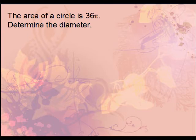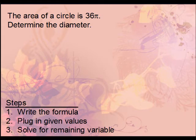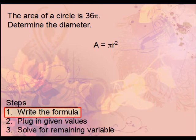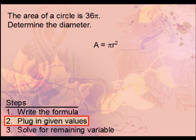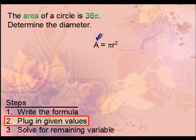Let's try another: the area of a circle is 36π — determine the diameter. Write the formula first. Since the formula involves radius, not diameter, we'll find the radius first. We plug in the given area: 36π goes in for A, not for r.